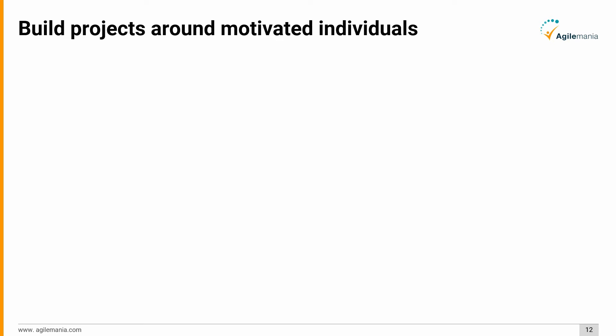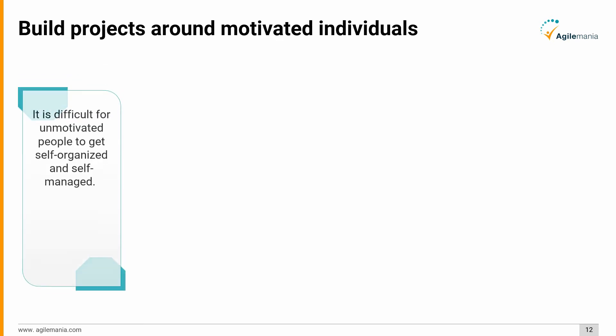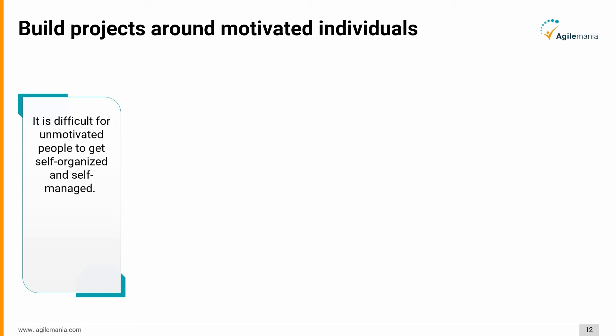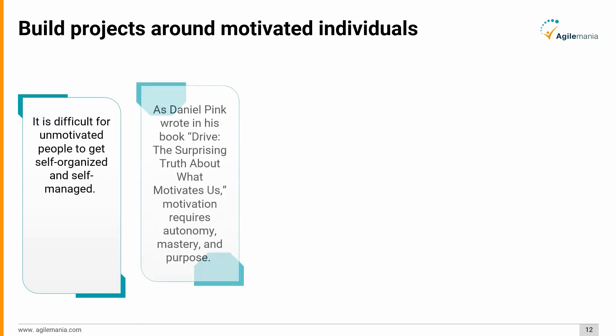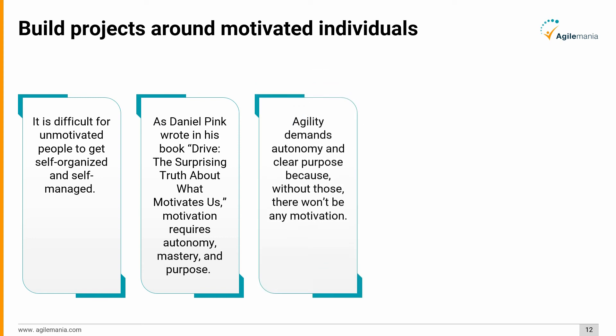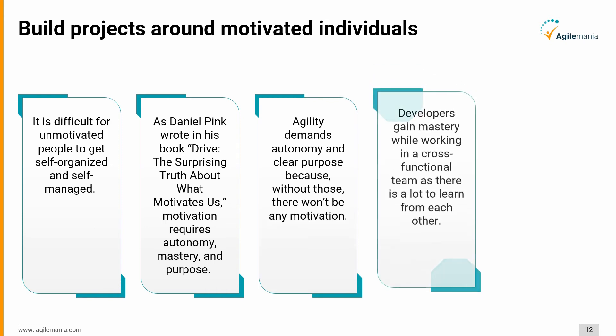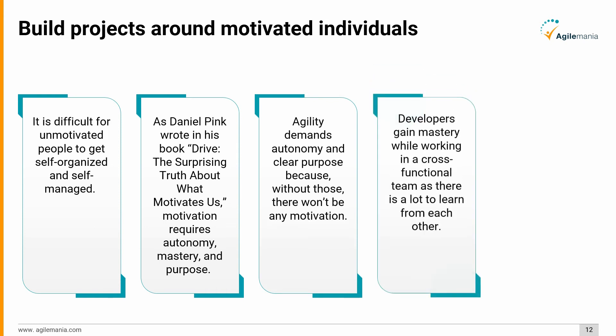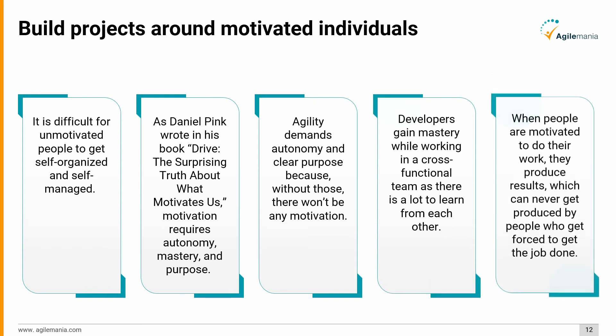The fifth principle in detail: build projects around motivated individuals. It is difficult for unmotivated people to be self-organized and self-managed. As Daniel Pink wrote in his book 'Drive: The Surprising Truth About What Motivates Us,' motivation requires autonomy, mastery, and purpose. Agility demands autonomy and clear purpose, because without those there won't be any motivation. Developers gain mastery while working in a cross-functional team, as there is a lot to learn from each other.